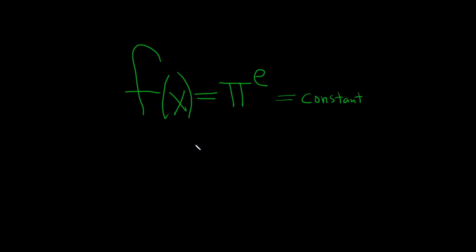We know from calculus that whenever you have a constant and you take the derivative, you just get 0. So the derivative of this is just 0.